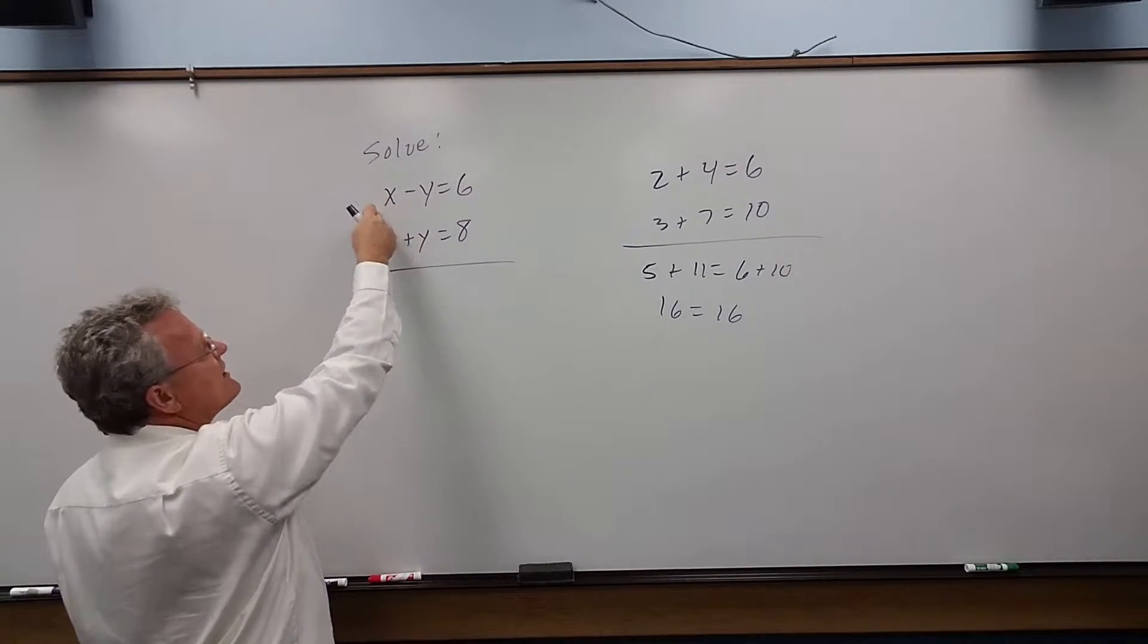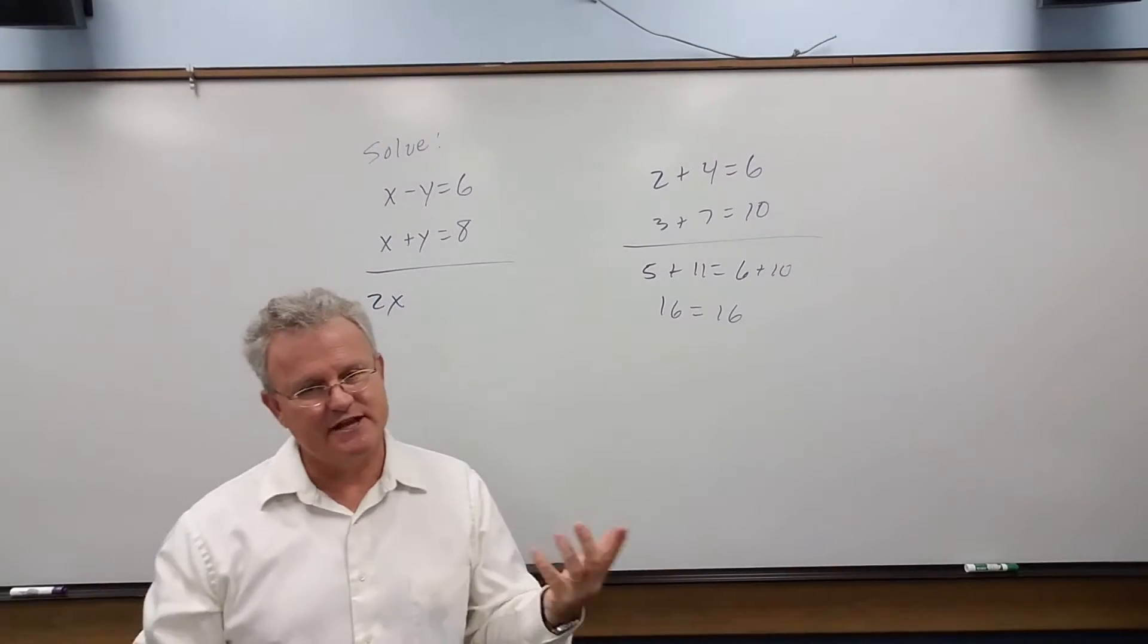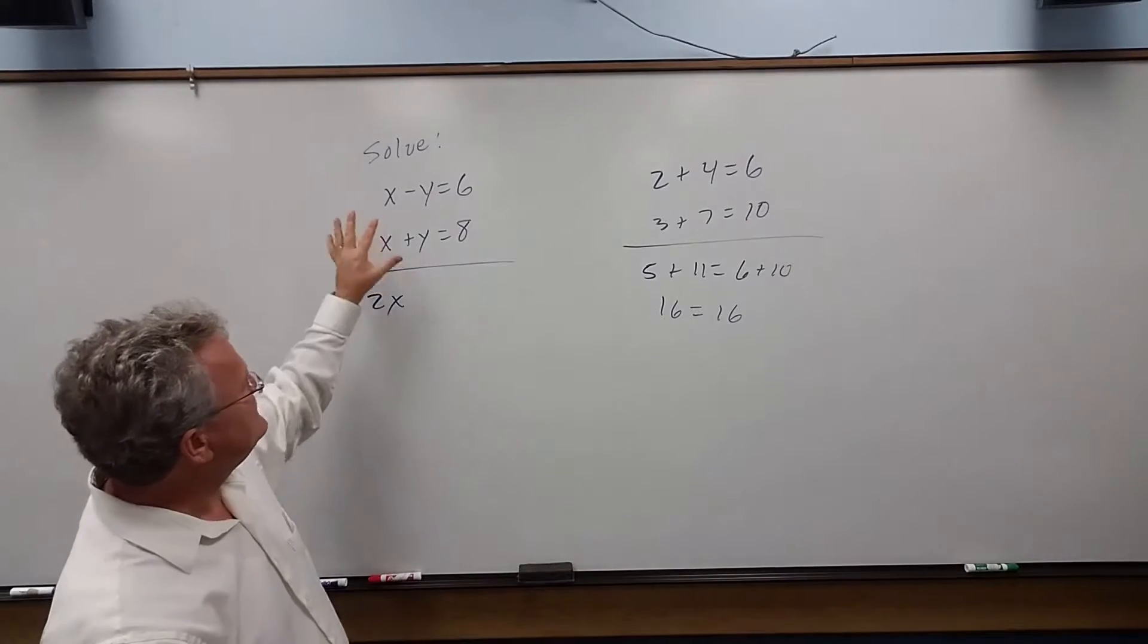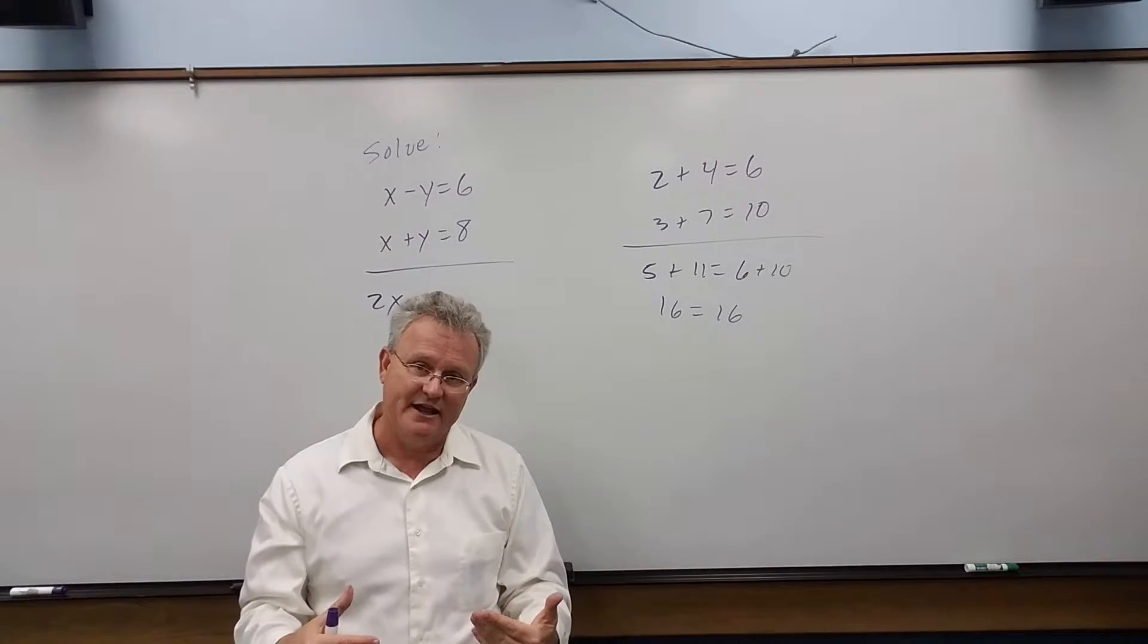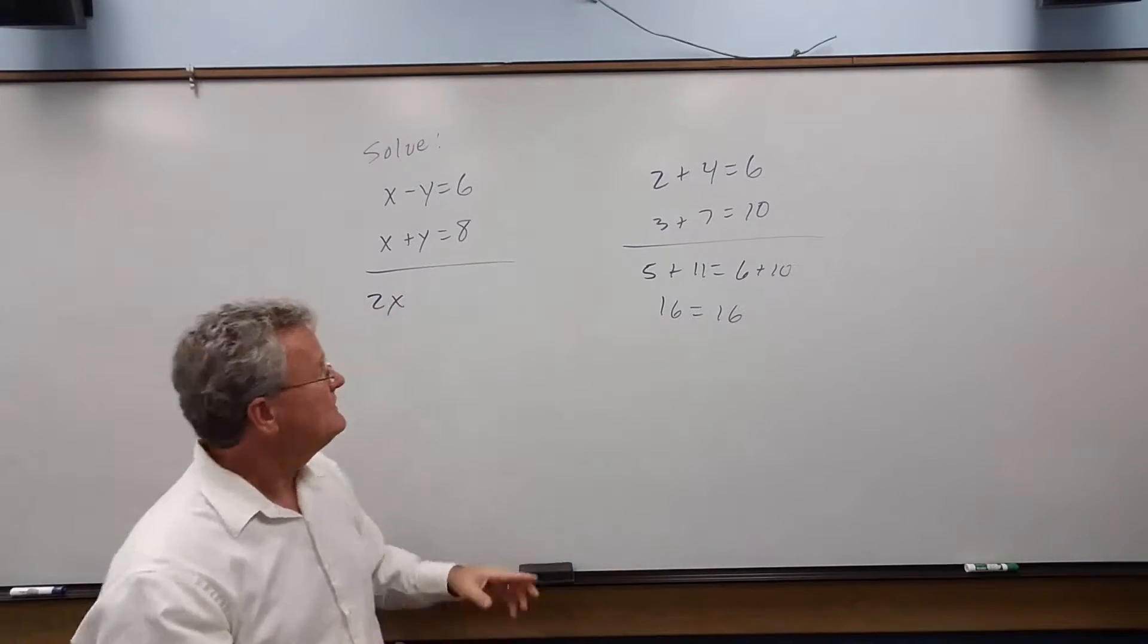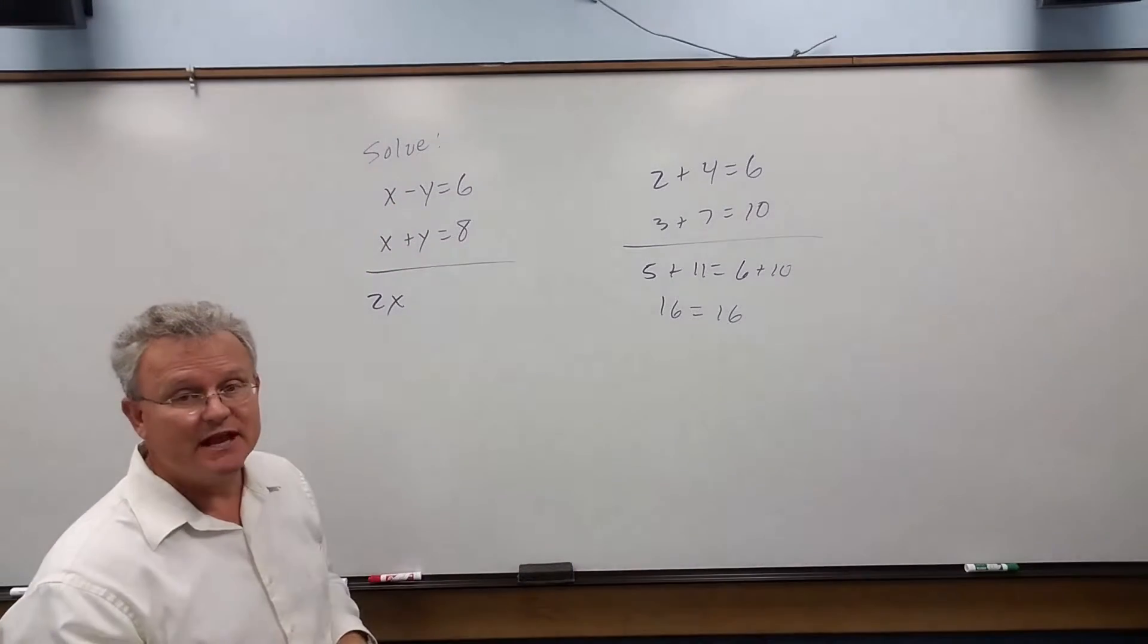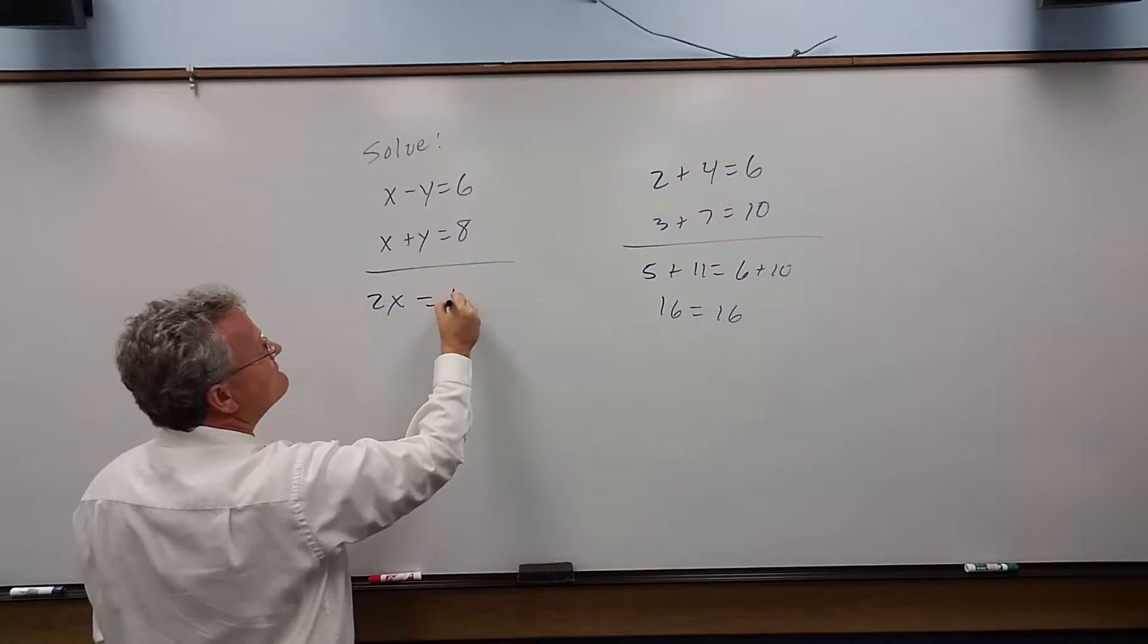So now continuing, 1x and 1x is 2x. And this problem is set up already where we don't need to manipulate it to multiply, so that when we add the two equations, one of the variables is eliminated. Here the y's will be eliminated immediately. Those add up to 0 and here we get 14.